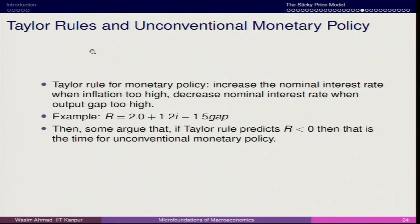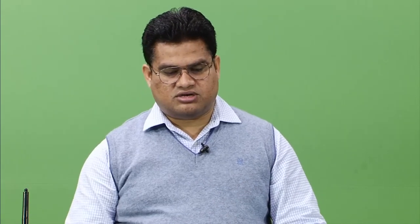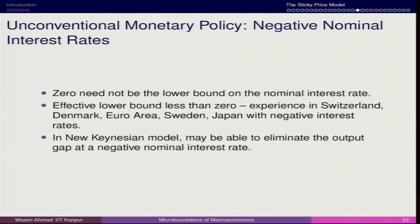In terms of monetary policy and unconventional monetary policy, most countries have different types of policy rates. In the US there is the federal funds rate; in India we target the repo rate and reverse repo rate. Whenever a monetary policy stand takes place, the central bank hovers around these two rates and tries to balance the money supply in the economy. We will be talking about these things in the next session.